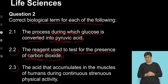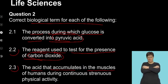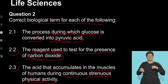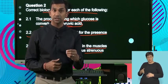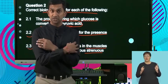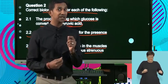Question 2.3. The acid that accumulates in the muscles of humans during continuous, strenuous physical activity. And we refer to that as anaerobic respiration in animal cells, where in the absence of oxygen, respiration does occur, but it builds up in muscles causing stiffness. So I hope that rings a bell.